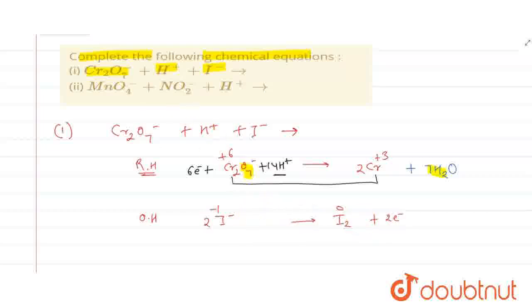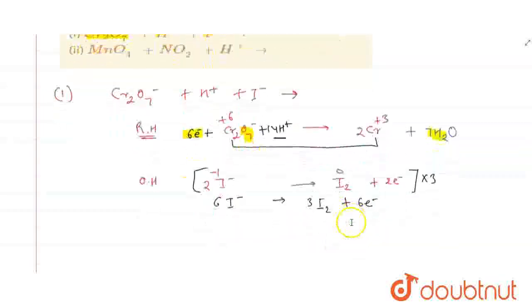But in the reduction half, we have 6 electrons. So we will write here 6 electrons. For that we will multiply the equation with 3. So we will get 6I- which gives 3I2 plus 6 electrons. This is the balanced form.